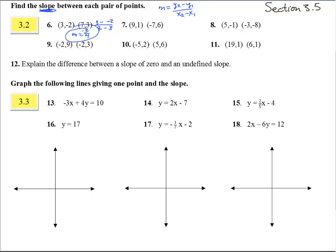Number 7, here we're going to have 6 minus 1 over negative 7 minus 9, that gives us 5 over negative 16, negative 5 sixteenths, that's what m equals.